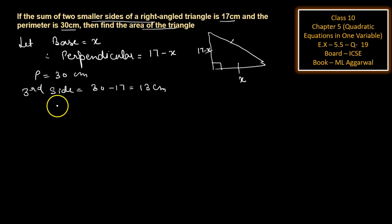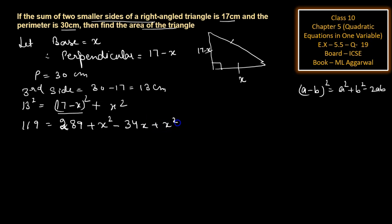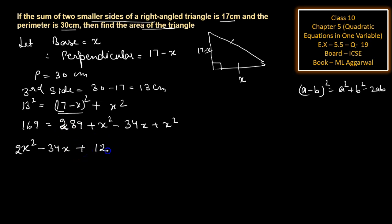Now using Pythagoras theorem: hypotenuse squared equals perpendicular squared plus base squared. 13 squared is 169. Using the formula (a minus b) squared equals a squared plus b squared minus 2ab, we expand: 169 equals 289 plus x squared minus 34x plus x squared. Combining: 2x squared minus 34x plus 289 minus 169 equals 0, giving 2x squared minus 34x plus 120 equals 0. Dividing by 2.